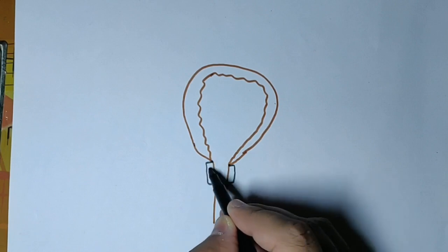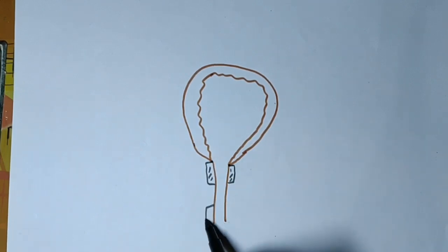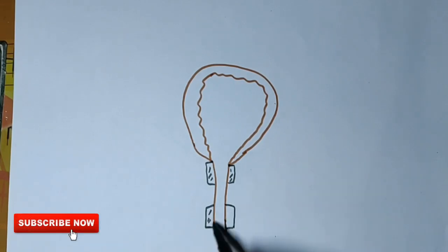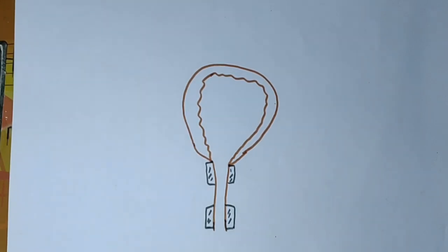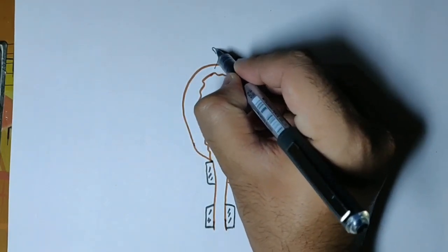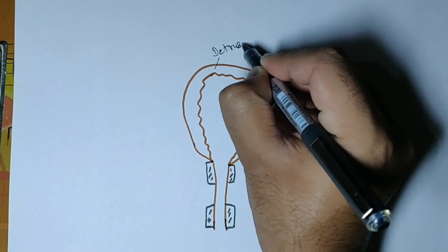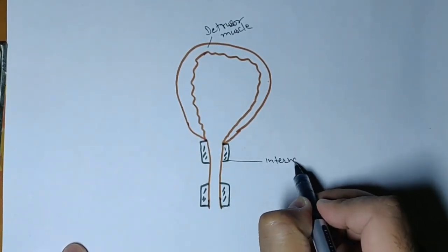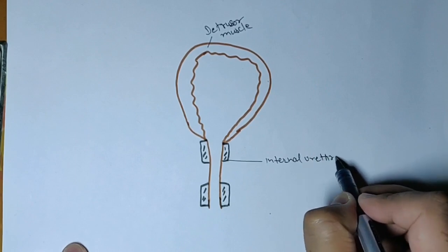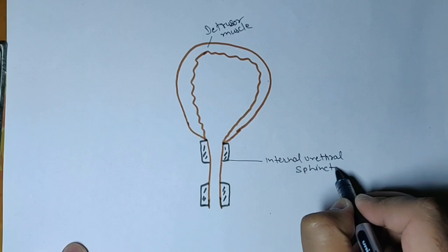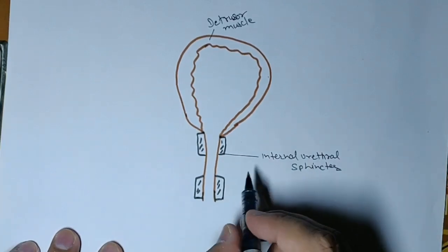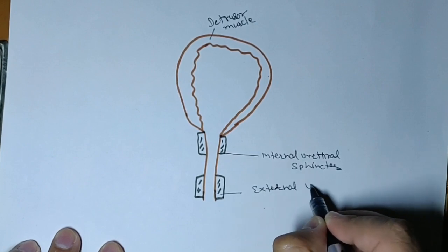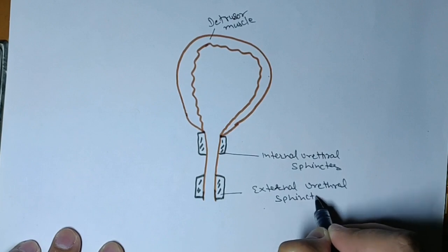This is the bladder, and below we have two sphincters. One is at the neck of the bladder and one is below. The muscle of the bladder is the detrusor muscle. The inner one is known as the internal urethral sphincter, which is related to the neck of the bladder, and on the external side we have the external urethral sphincter, which is related to the apex of the prostate gland.